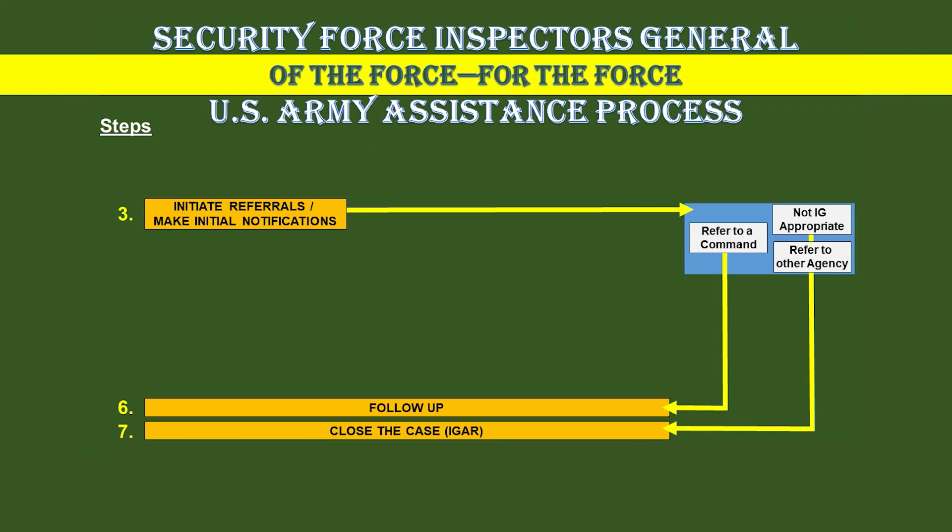Step three: Initiate Referrals, Make Initial Notifications. This step determines IG appropriateness. The problem may have to be referred to another Army IG office, another agency such as Criminal Investigations Division, Military Police Investigations, or Civil Authorities, or another command which requires the commander to assign a non-IG investigating officer and conduct the investigation. There are several issues that are not IG appropriate. For example, a soldier who doesn't agree with his evaluation — this is not a valid IG request because the Army evaluation process has a redress system.